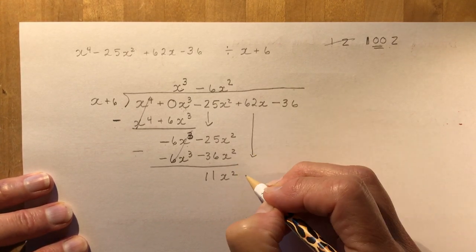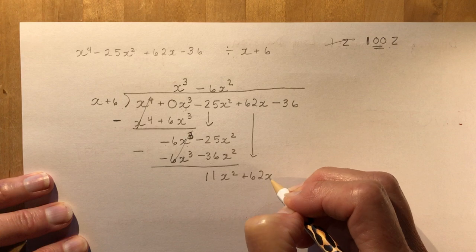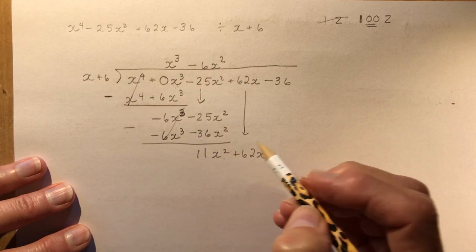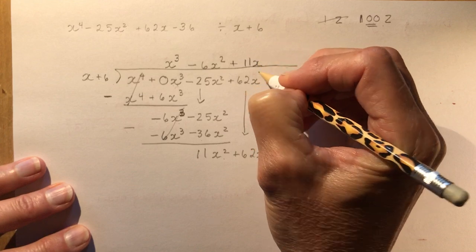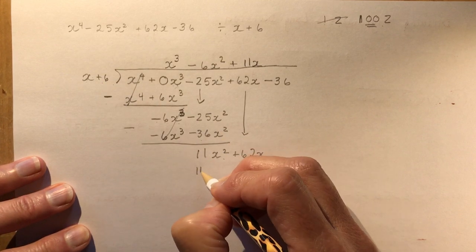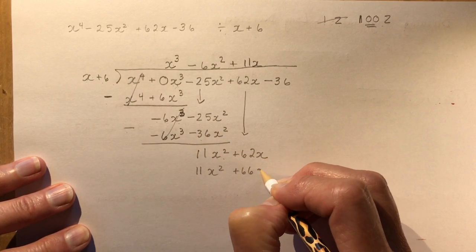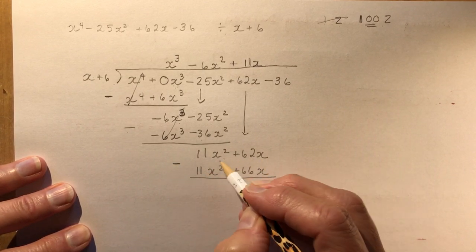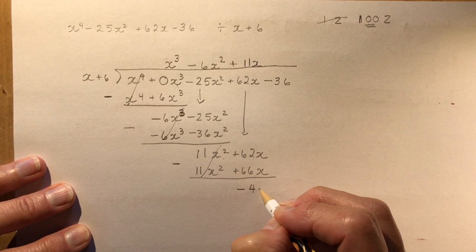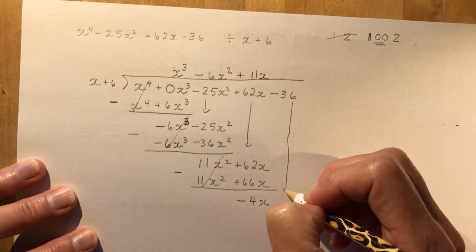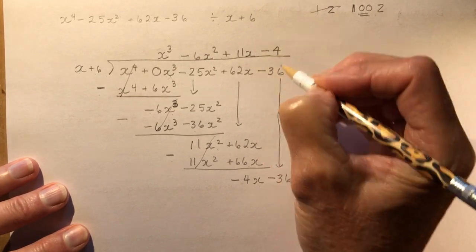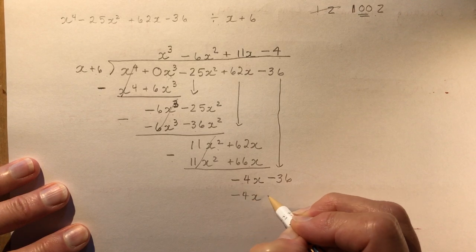Bring down 62x. To eliminate 11x², multiply x by 11x, giving 11x² plus 66x. Subtract: 11x² terms cancel, and 62 minus 66 is minus 4x. Bring down minus 36. To eliminate minus 4x, multiply x by minus 4, giving minus 4x minus 24.